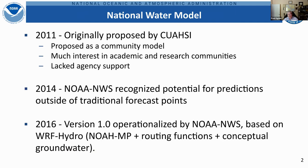A little background: the National Water Model was originally proposed in 2011 by CUAHSI as a community model. It generated a lot of interest in the academic and research communities, but it lacked agency support. Agencies at the time were heavily involved in developing their own modeling systems and frameworks, often multiples within agencies, and it just didn't gain any traction.